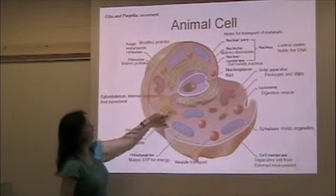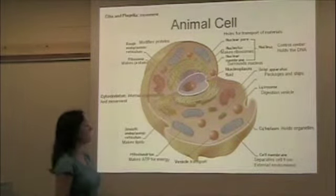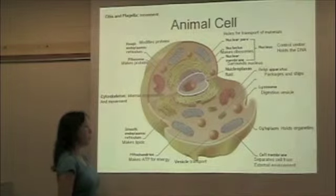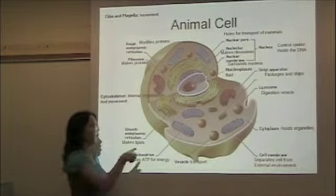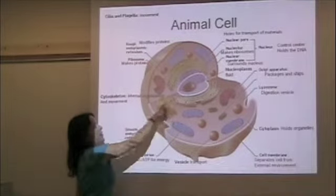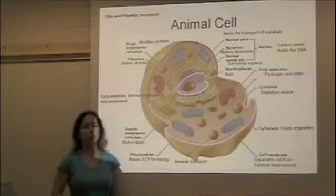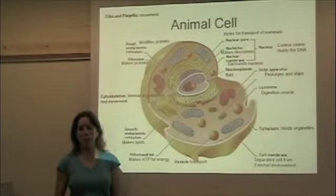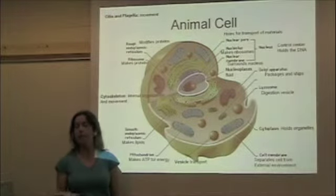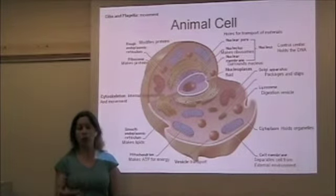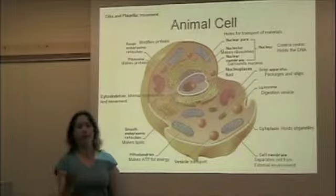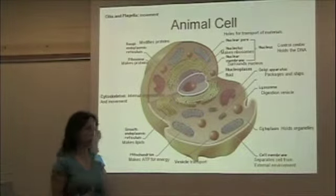The cell also has the smooth endoplasmic reticulum, or smooth ER. It doesn't have any ribosomes, which is why it has a smooth appearance. It doesn't need ribosomes because its job is to make fats — it doesn't have anything to do with proteins.